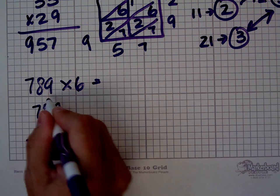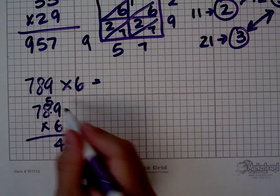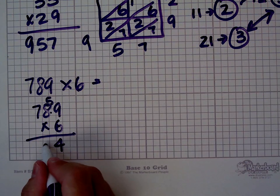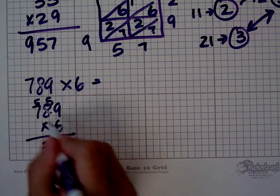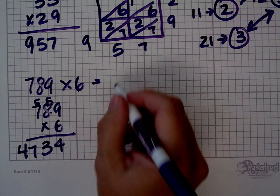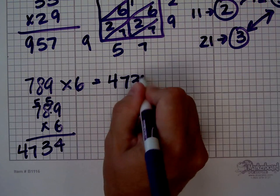9 times 6 is 54, 6 times 8 is 48, and 5 is 53. 7 times 6 is 42, and 5 is 47. So it's 4,734.